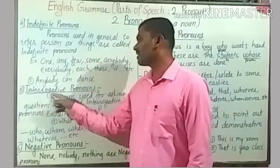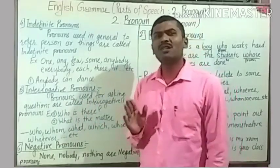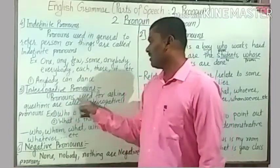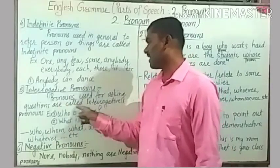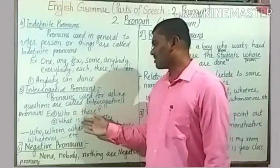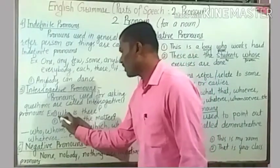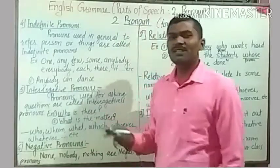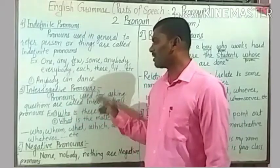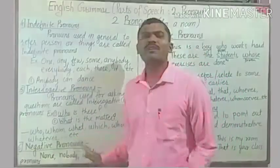Number five: interrogative pronouns. Interrogative pronouns are words used for asking questions. Pronouns used for asking questions are called interrogative pronouns. For example, 'Who is there?' 'What's the matter?' These are interrogative pronouns because they are used to ask questions. More examples of interrogative pronouns are: who, whom, what, which, whoever, whatever, etc.